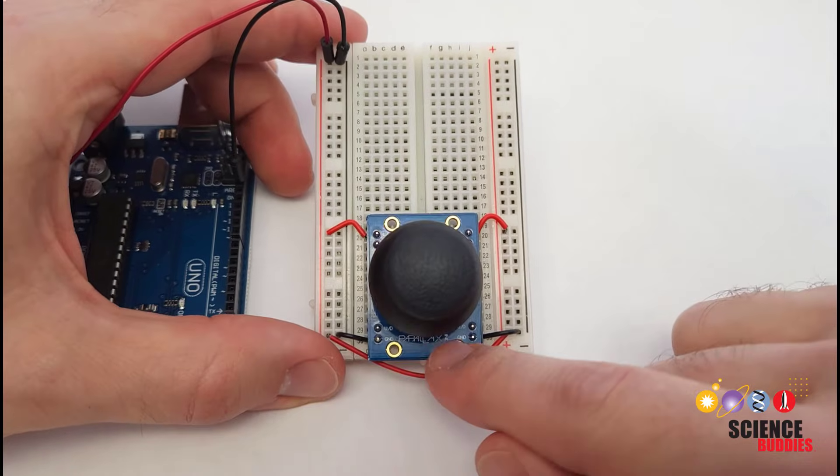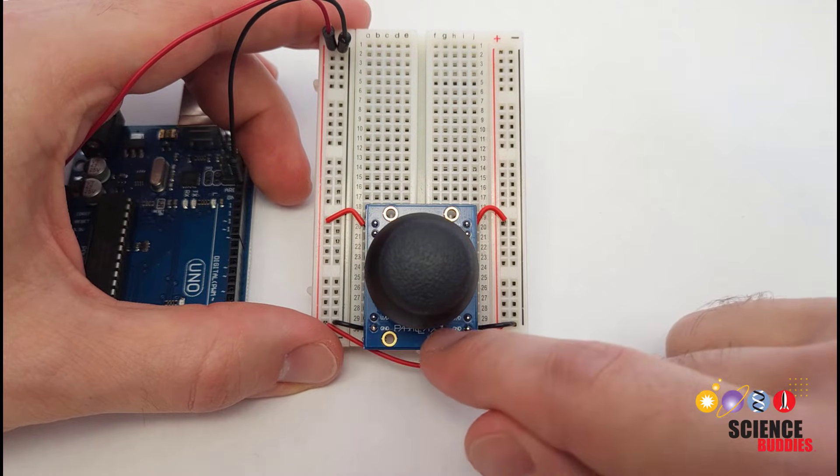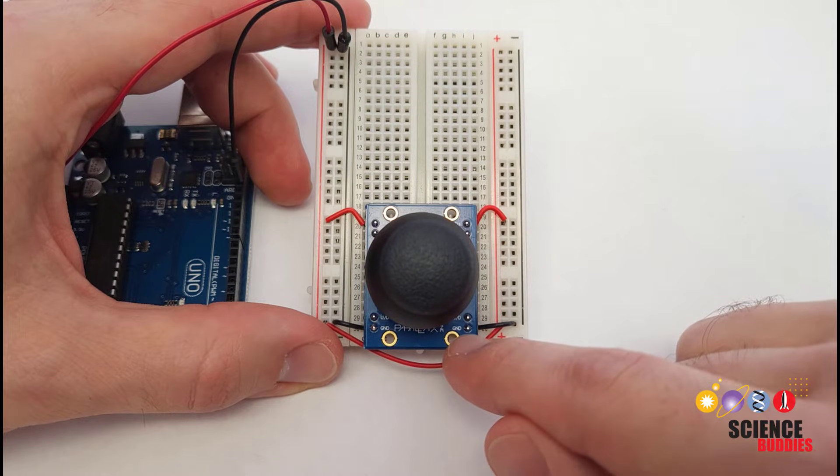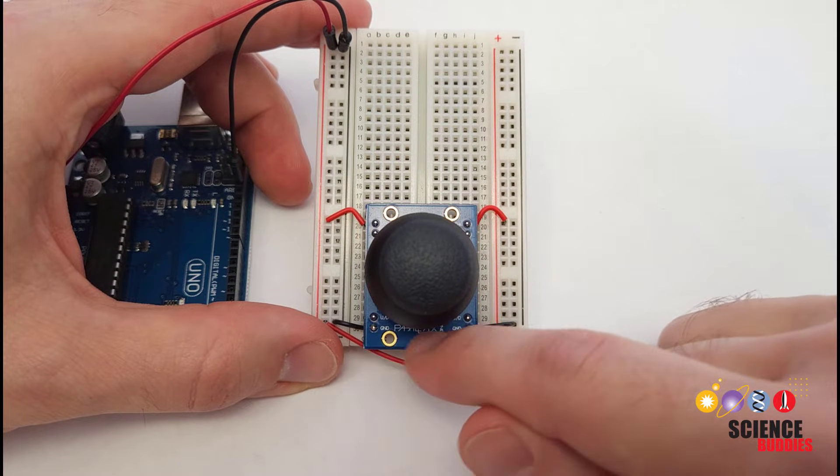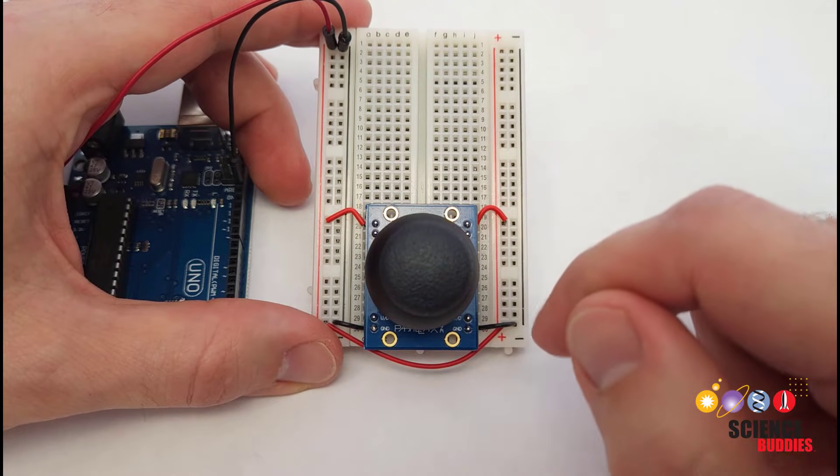I also have two ground pins down here at the bottom. I tested with a multimeter and these ground pins are actually connected internally, so while technically you don't need to connect both of them since they're connected, I've just put in a jumper wire here on each side for a little redundancy.